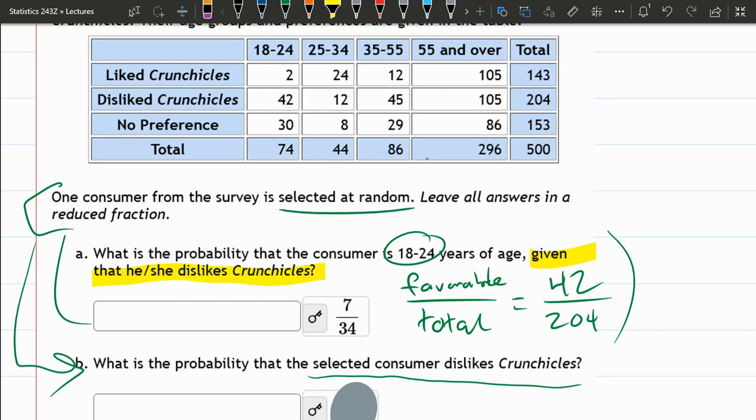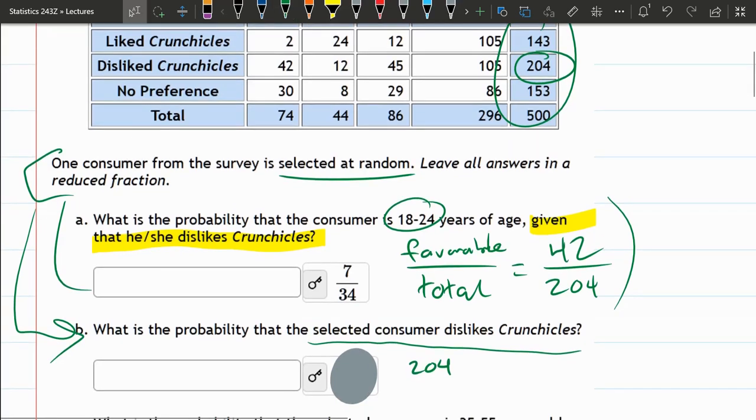So one selected at random, nothing to do with ages. So we can look at just this total right here, dislikes. So that's favorable in this case. Favorable is 204. And the total is 500. And reducing that, it'll definitely reduce 51 over 125.